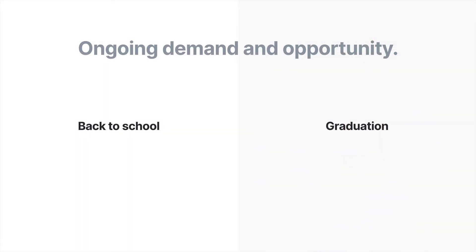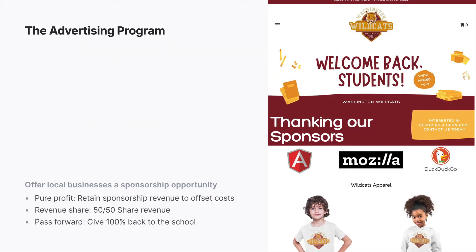I want to reinforce this notion of ongoing demand and opportunity — this goes back to switching the mindset. Back-to-school sales commence in August but conclude with graduation. As you can see from Gandy Inc., they're back at it early May, proactively promoting that back-to-school is forthcoming and getting in preparation. So that is the framework. Let's now move into the four pillars of the back-to-school marketing kit.